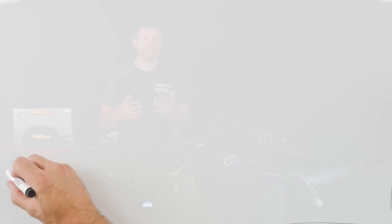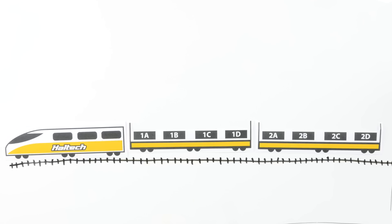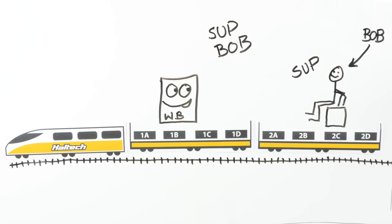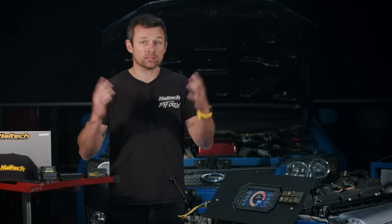One way CAN communication has been described is like a train on a track. At a specific time interval, the train is sent down the track. That train has a set number of carriages, and in each carriage there's a set number of seats, with each seat set aside for a specific packet of information. For example, when I plug a wideband O2 controller into the Haltech CAN network for my Elite or Nexus ECU, there's already a seat on the train set aside for wideband sensor information. Any devices programmed to receive that data already know exactly which carriage and seat to look in. Devices that don't need wideband O2 data simply ignore that information.